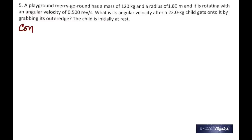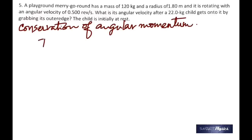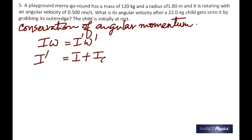Number 5: a playground merry-go-round has a mass of 120 kg and a radius of 1.80 meters and is rotating with an angular velocity of 0.5 revolutions per second. What is its angular velocity after a 22-kg child gets on by grabbing its outer edge? This is a clear case of conservation of angular momentum — it's going to slow down. By conservation: I₁ω₁ = I₂ω₂. The new moment of inertia is the sum of the merry-go-round's and the child's.